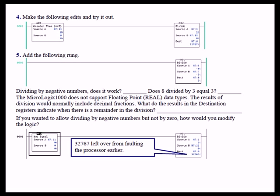Then we had to add the following rung, rung 2, and we're going to divide by negative numbers. When you divided by negative numbers, did it work? Yes, it did. Does 8 divided by 3 equal 3? Yes, if you round it off.